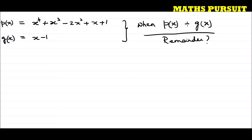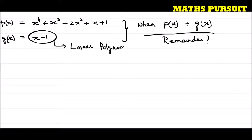Now if you look here, the divisor is a linear polynomial. As I mentioned earlier, if we are dividing a polynomial by a linear polynomial, we can easily apply the Remainder Theorem. So let us apply the Remainder Theorem since g(x) is a linear polynomial.